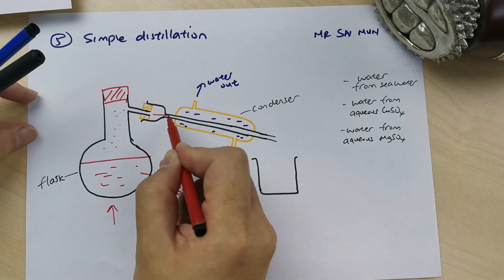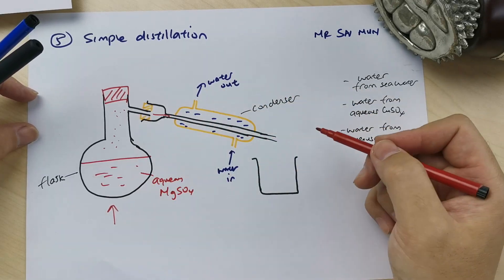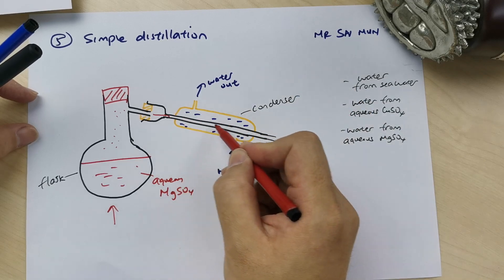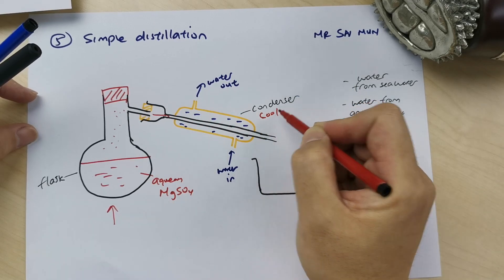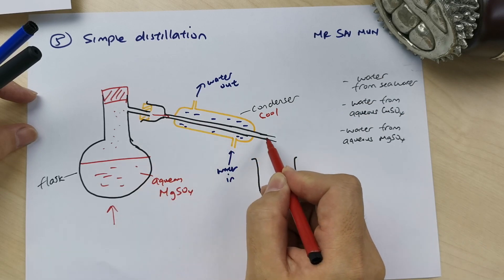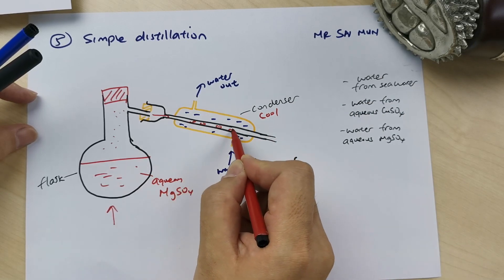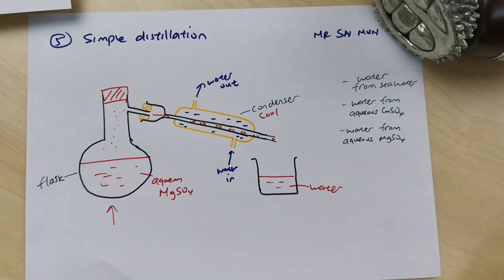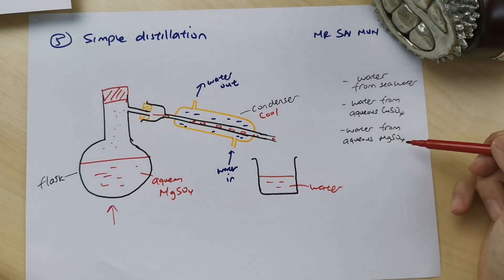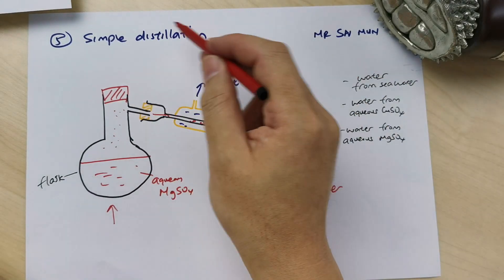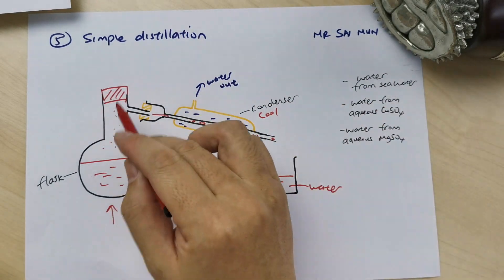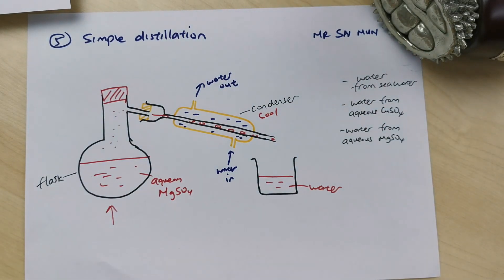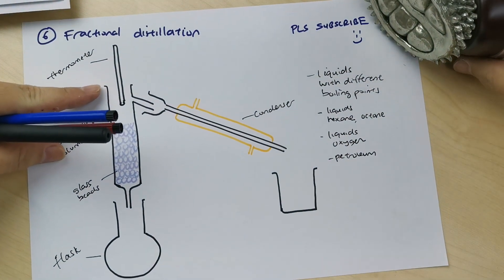The water vapor flows into the condenser — water goes in and out of the condenser jacket to cool it. Once cooled, the vapor condenses and you collect liquid water. Whenever you want to get water from a salt solution, use simple distillation. Notice it's called 'simple' — there's no thermometer, just pour the solution in and collect the water.